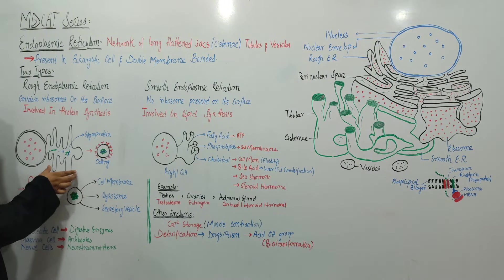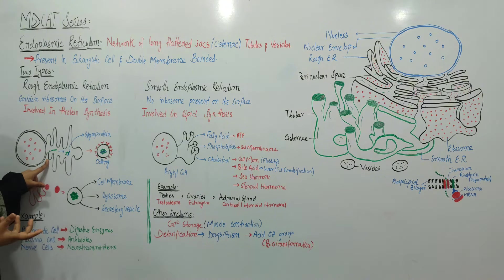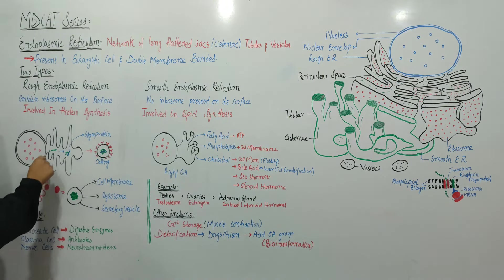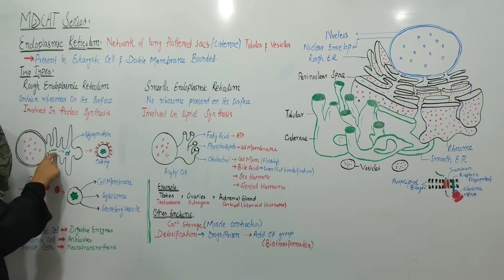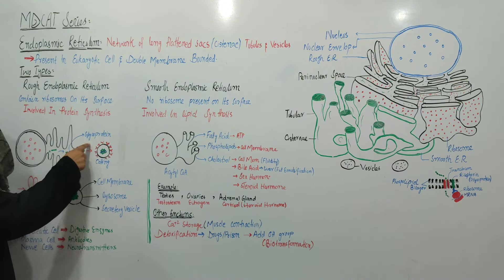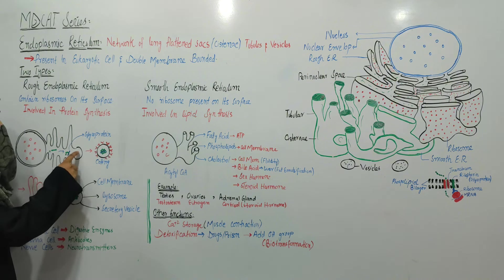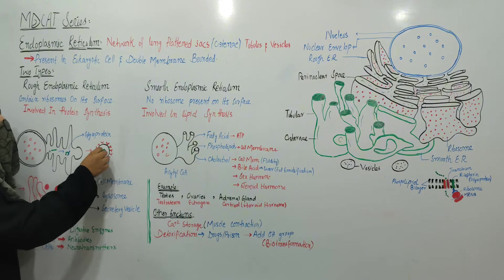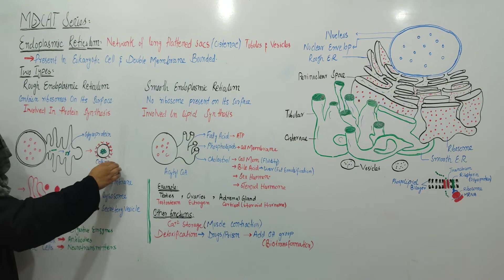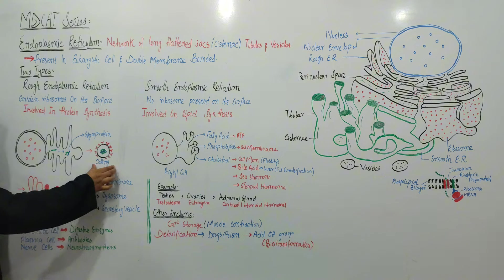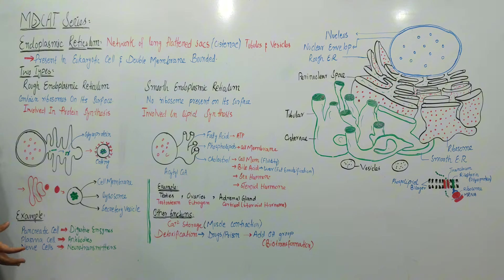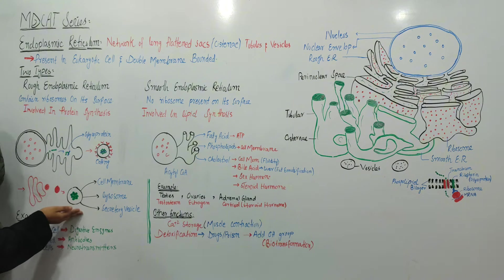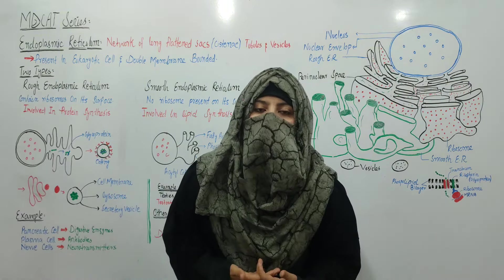In the endoplasmic reticulum, when a protein is made, it enters the channel space. When proteins are processed, they attach to carbohydrates forming glycoproteins. These glycoproteins are packaged into vesicles with a protein coat so they can travel to the Golgi apparatus. The Golgi apparatus receives this protein, performs packaging, makes modifications, and transfers it. The processed protein becomes part of the cell membrane.